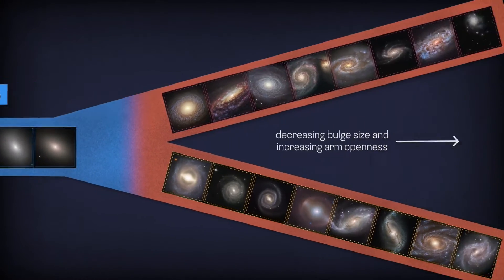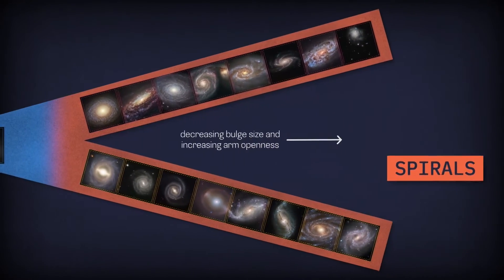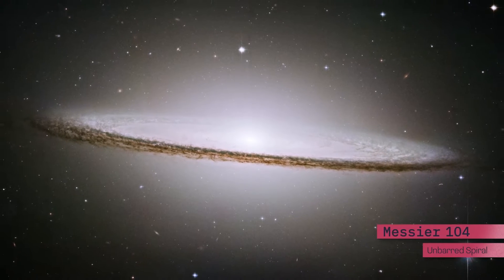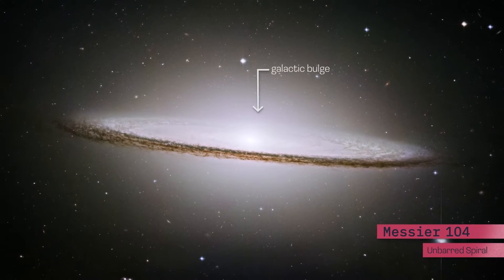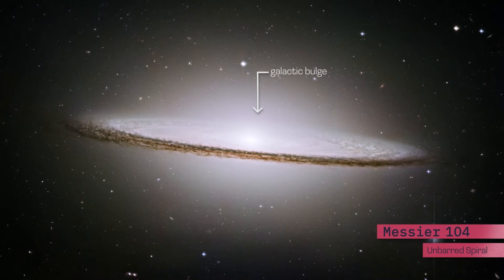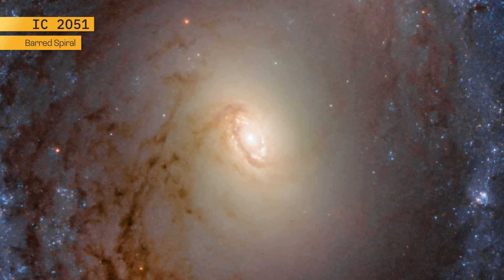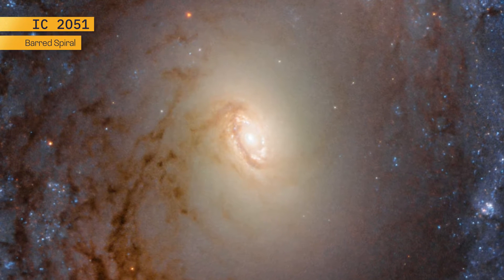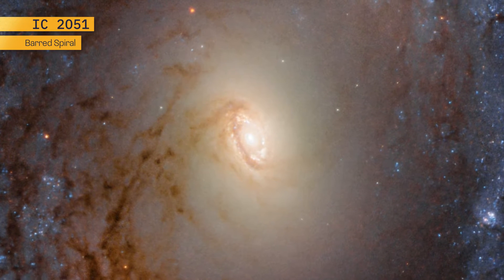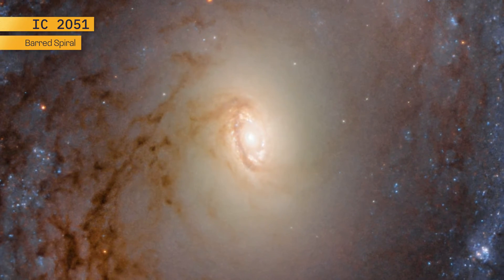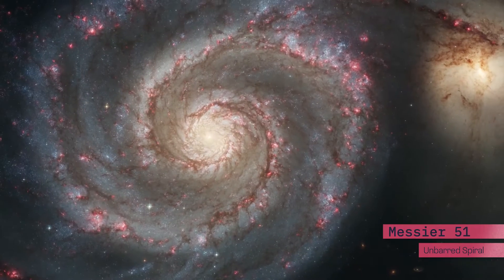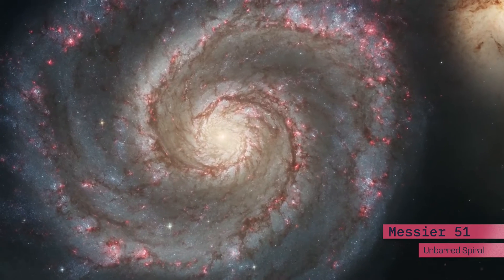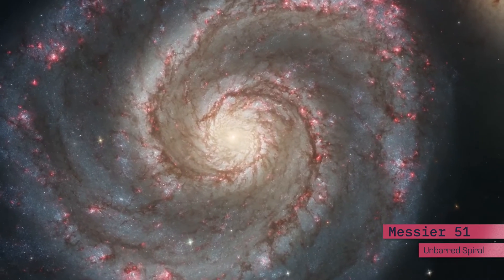The best-known galaxies are spirals. The center of a spiral galaxy has a large, roughly spherical swarm of stars called a bulge. This bulge looks similar to an elliptical galaxy, but spirals differ from ellipticals because they rotate. Rotation gives spiral galaxies the flat disk that holds their spiral-shaped arms.